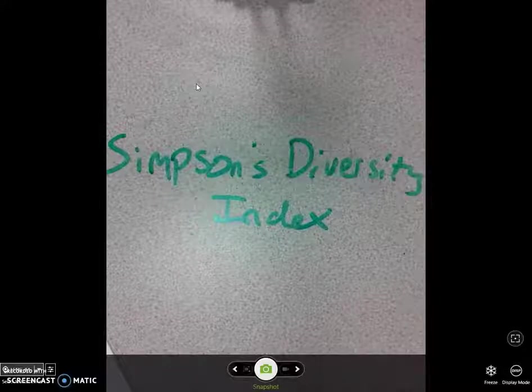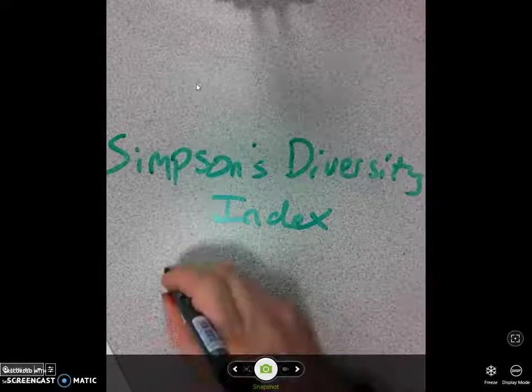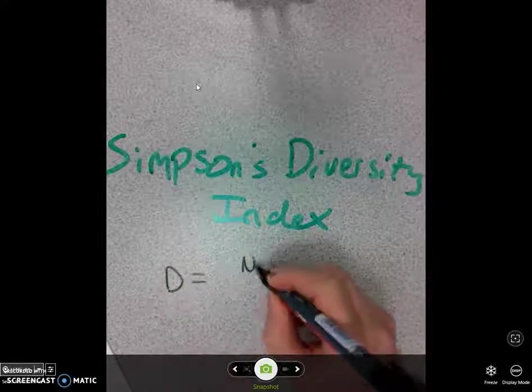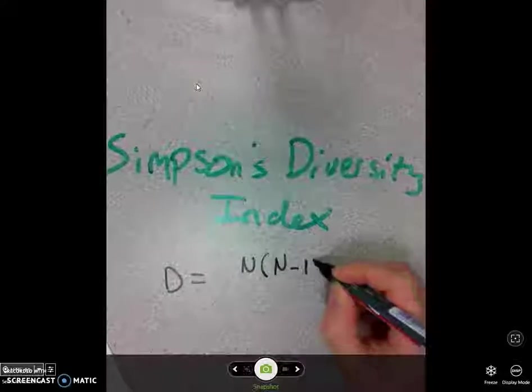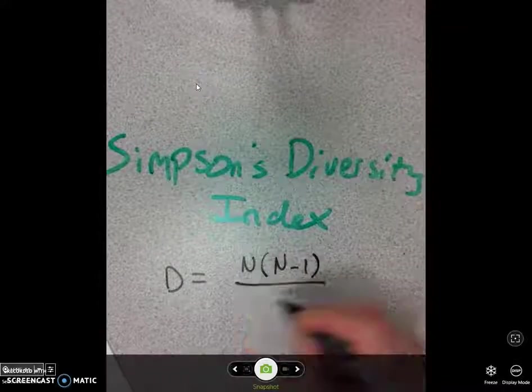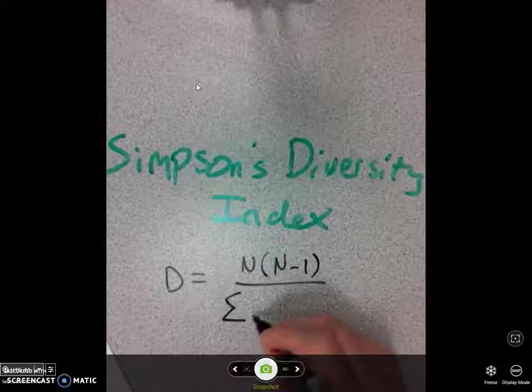Now, if you look up in your notes what Simpson's diversity index actually is, you'll find this equation, which at first glance looks a little bit horrible, but it's actually really easy to calculate.